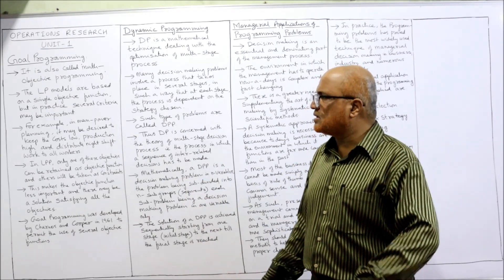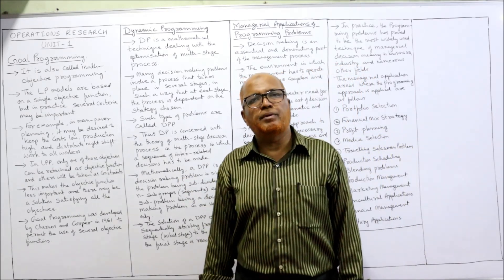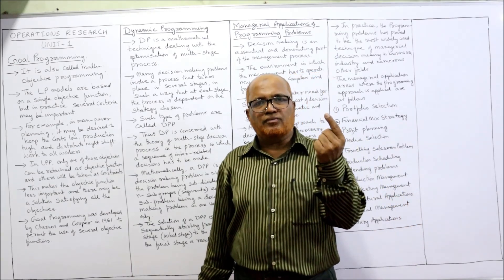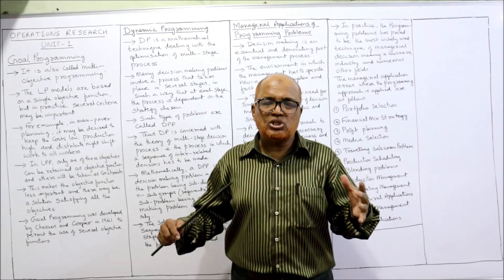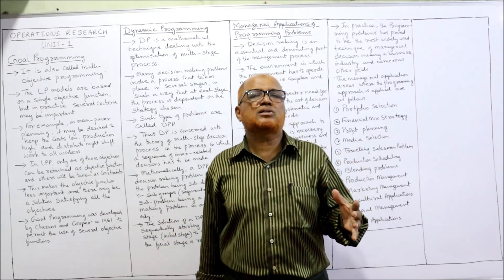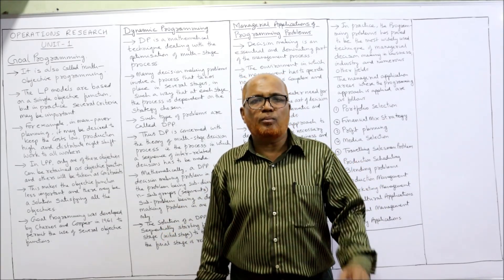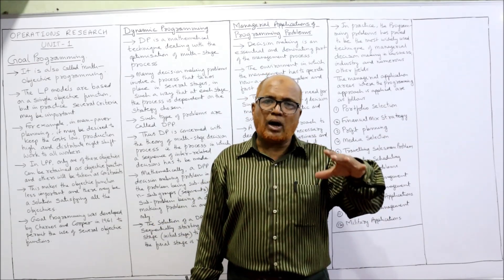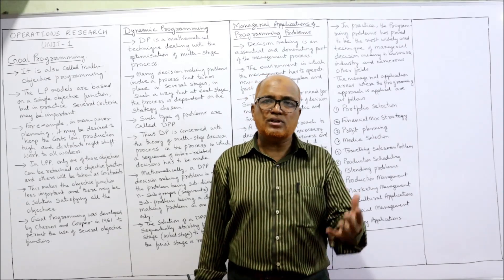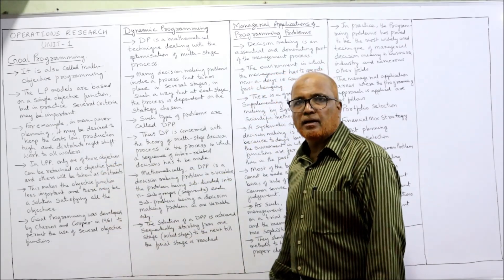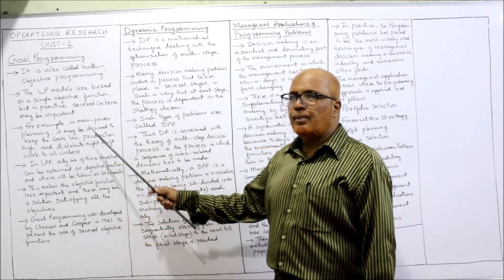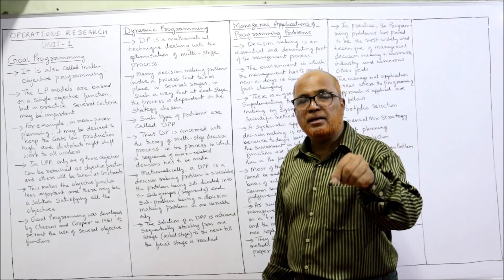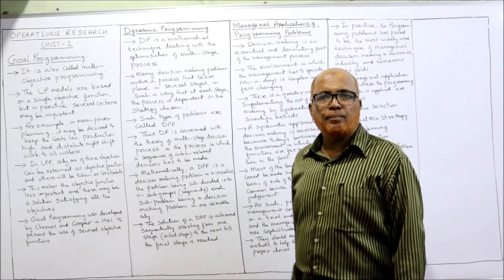In linear programming, models are based on a single objective function. But in practice, several criteria may be important. A simple problem has only one objective, but nowadays the business situation is so complex that we have a multiplicity of objectives. So how to obtain those multiple objectives for a single problem? We apply goal programming.